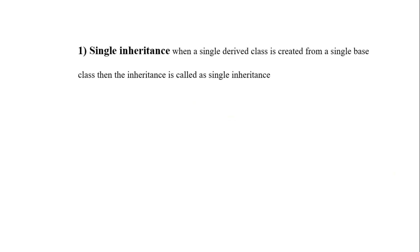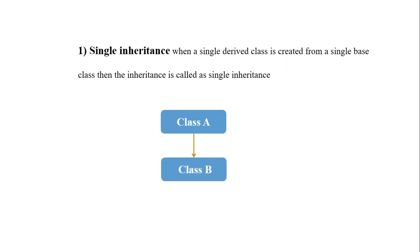Single inheritance is when a single derived class is created from a single base class — that type of inheritance is called single inheritance. In this type there is a single base class and a single derived class. Diagrammatically, here is class A as the base class or super class, and from class A we derive a new class — the derived class — that is class B. There is only one base class and only one derived class, so this is called single inheritance.